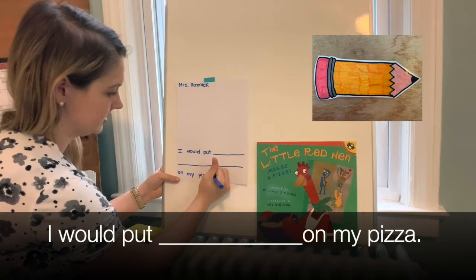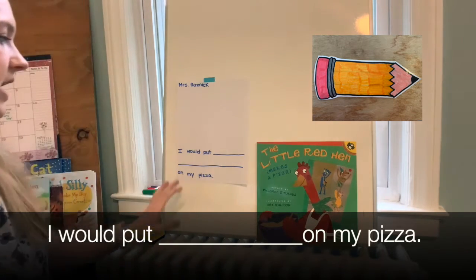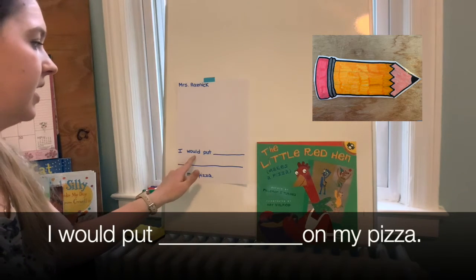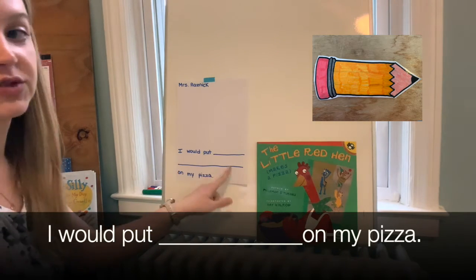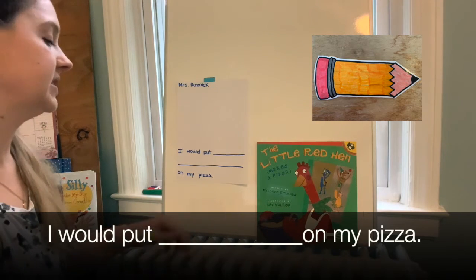So that is your sentence frame for today. It says 'I would put ___' (that's where you're going to write what you would put) 'on my pizza.'